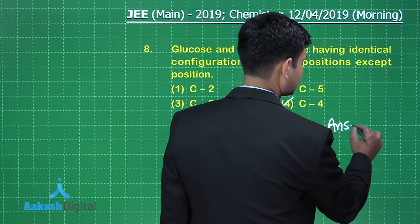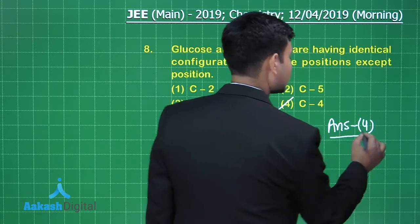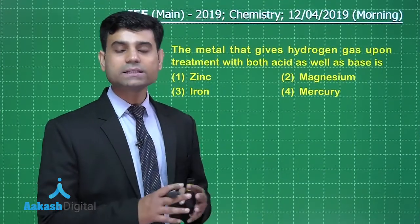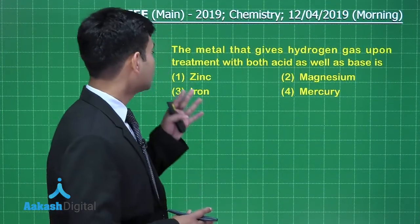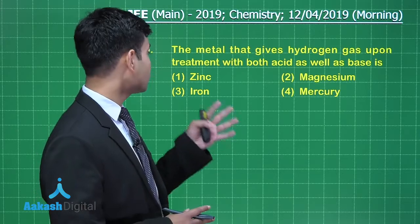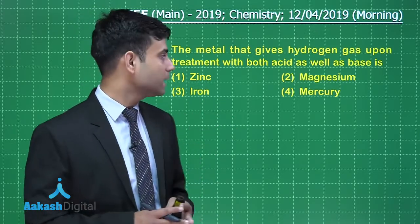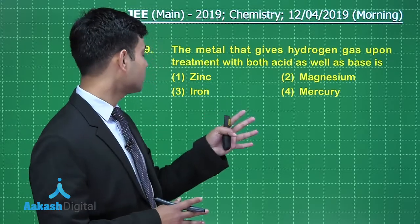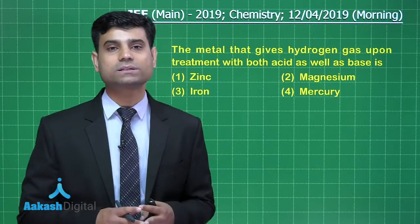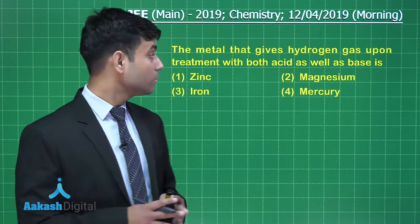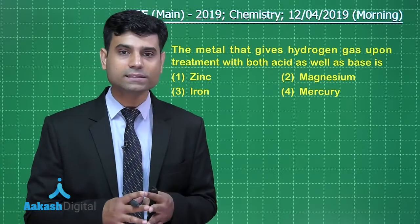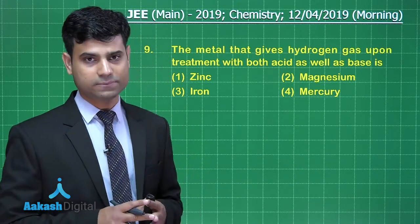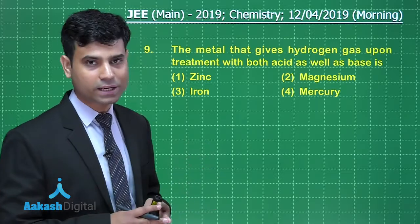The next question says: the metal that gives hydrogen gas upon treatment with both acid as well as base. The options are zinc, magnesium, iron, and mercury. Metals which give hydrogen gas upon reaction with both acids and bases are amphoteric metals. Out of the given options, only zinc is amphoteric in nature.